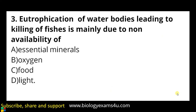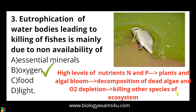Question number three: eutrophication of water bodies leading to killing of fishes is mainly due to non-availability of — a) essential minerals, b) oxygen, c) food. The answer is oxygen. Eutrophication is the enrichment of nutrients like nitrogen and phosphorus in water bodies. High nutrient levels from fertilizer runoff cause algal bloom and increased growth of hydrophytic plants, which then decompose and are broken down by microbes that consume the available oxygen.